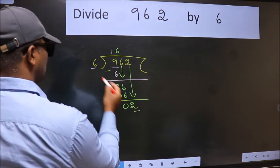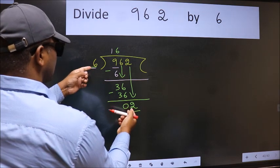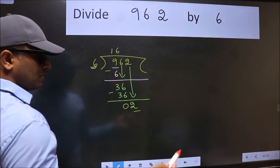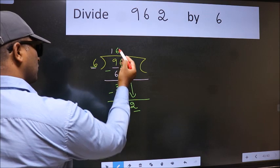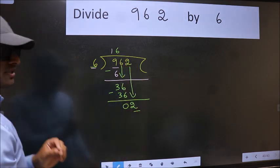Here we have 2 and here 6. 2 is smaller than 6. So what many do is, they directly put dot take 0. Which is wrong.